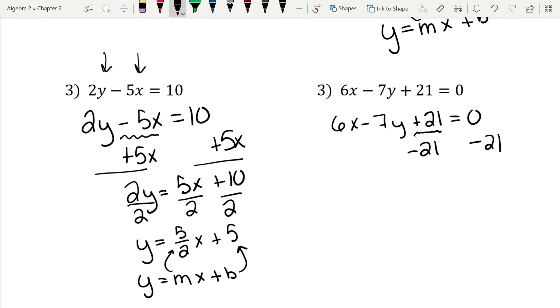Now remember, you could get rid of the x's first. It doesn't matter. It's all legal. Now we have 6x minus 7y equals negative 21. Now I need to get negative 7y by itself. So just like we've been doing, I have a positive 6x. The opposite of a positive is a negative. So I'm going to subtract 6x from both sides. And now we have negative 7y equals negative 6x minus 21.